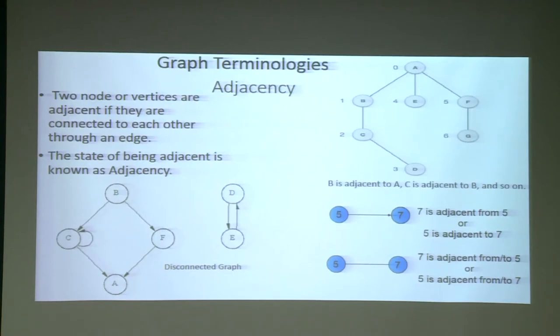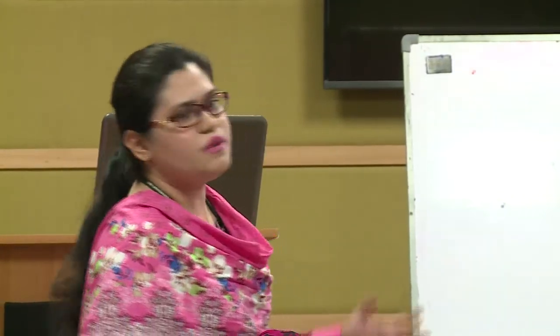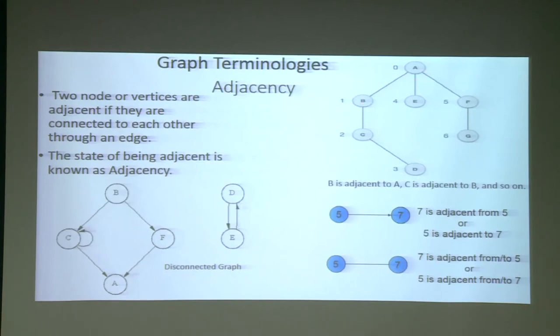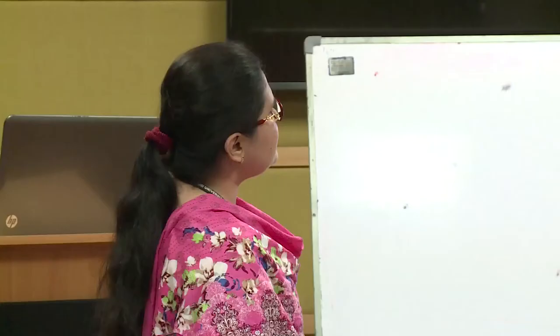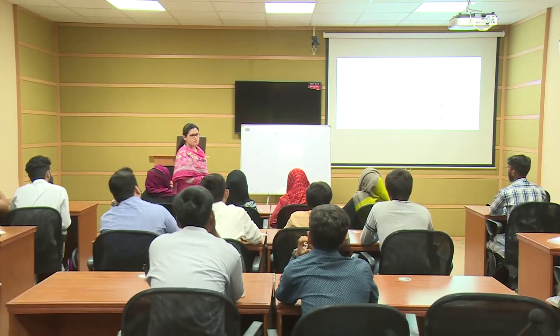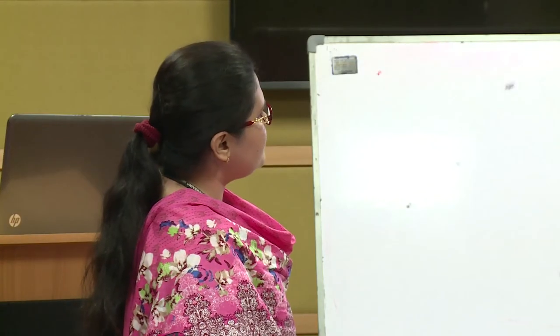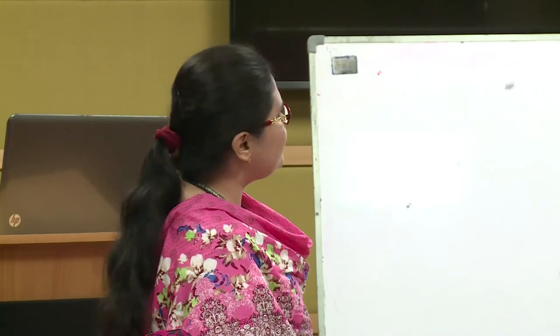Another important terminology is adjacency — the property of vertices connected to each other with edges. For example, A is adjacent to B, B is adjacent to C, C is adjacent to D, A is adjacent to E, A is adjacent to F, and F is adjacent to G in an undirected graph. In a directed graph, the arrowhead represents the destination and the start of the arrow represents the origin.